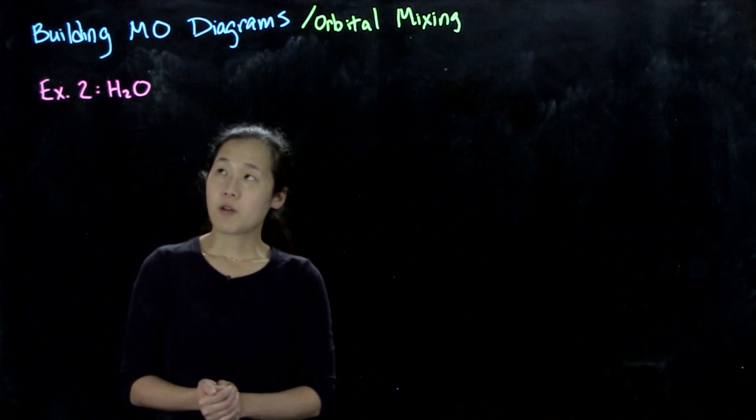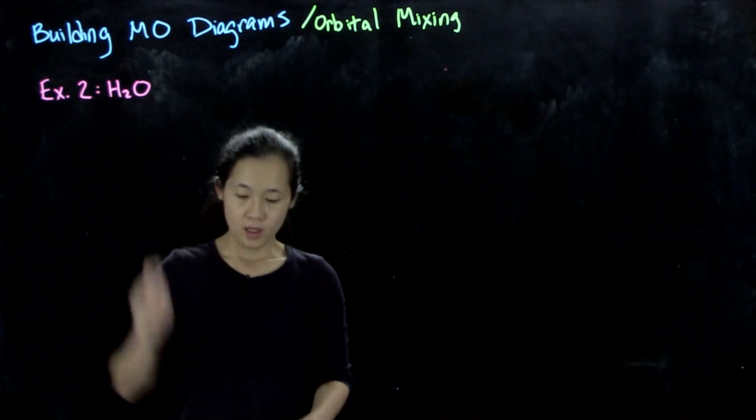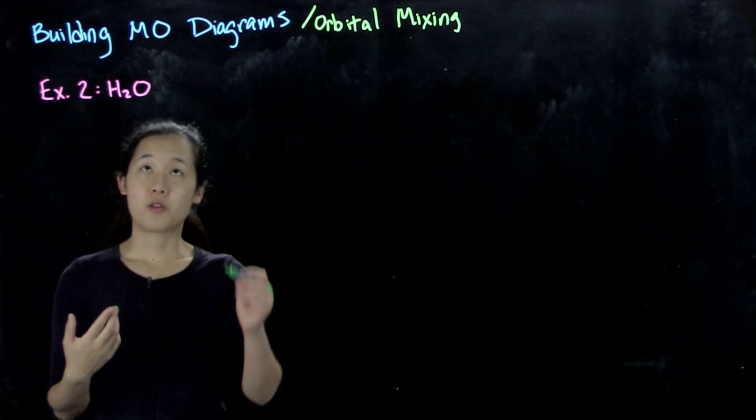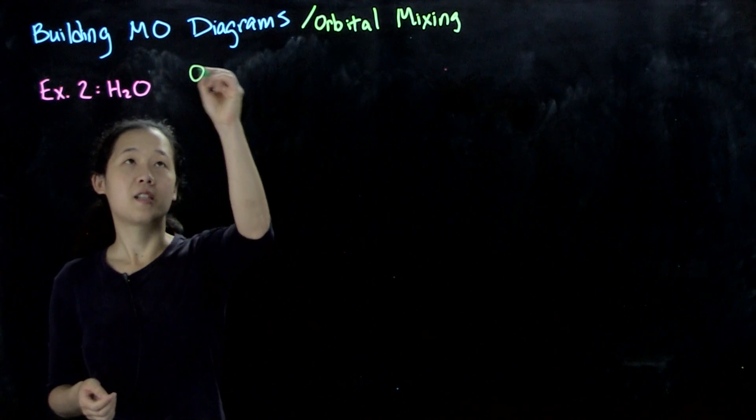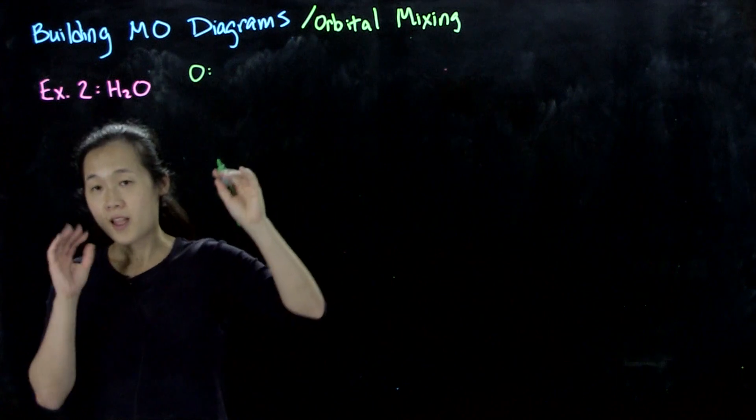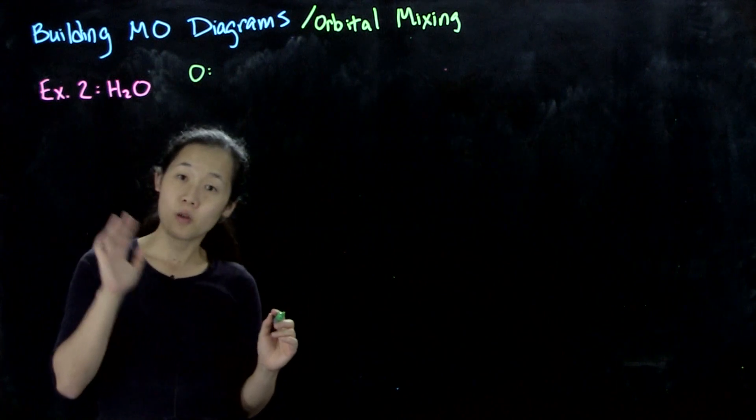Let's do a second example of building MO diagrams. We'll talk about water. In class, we talked about the atomic orbitals and their symmetry. For the oxygen atom, which is the central atom, we had our valence orbitals: 2s and three 2p orbitals.